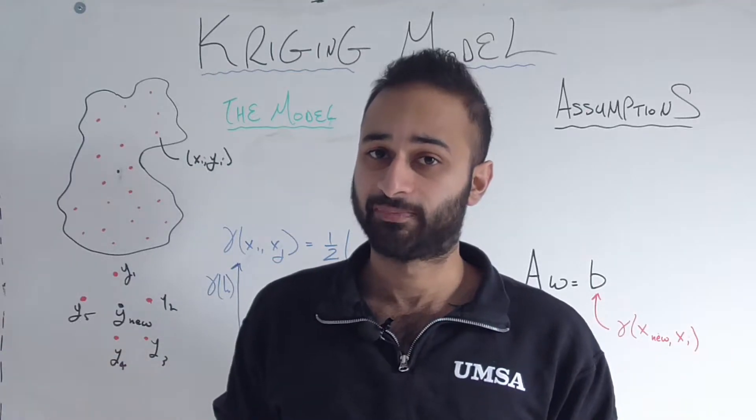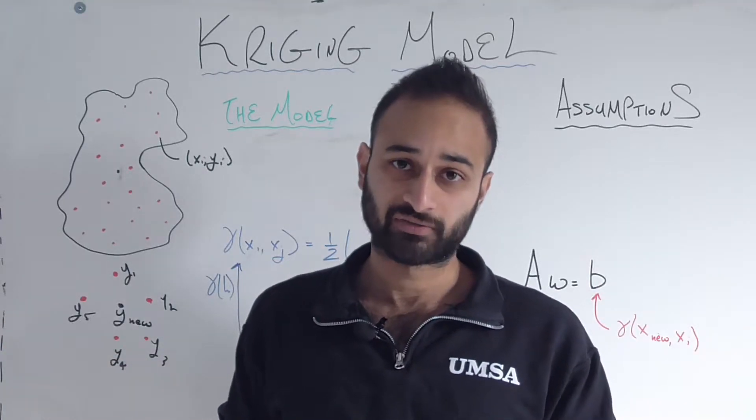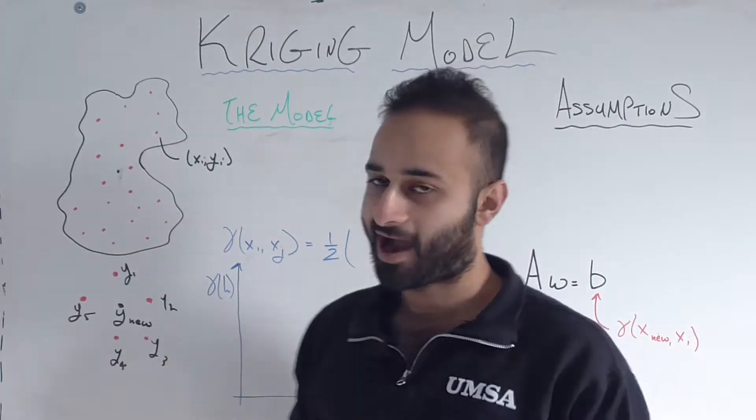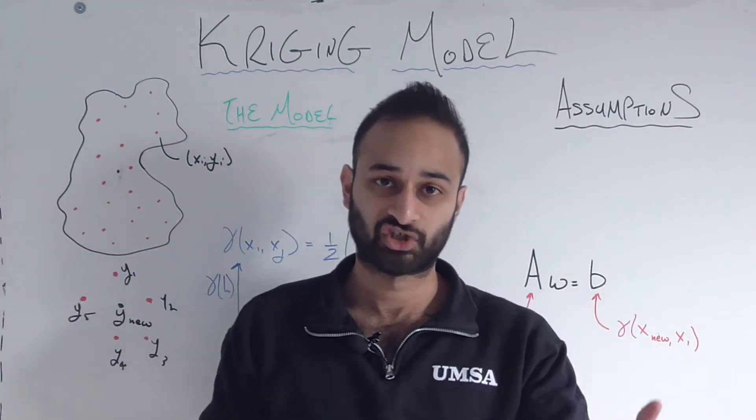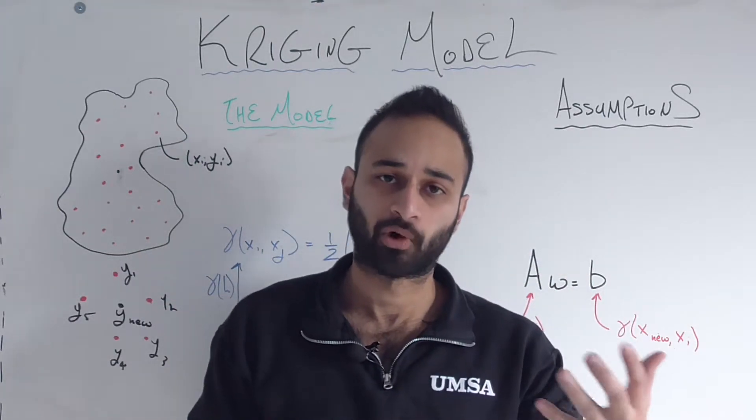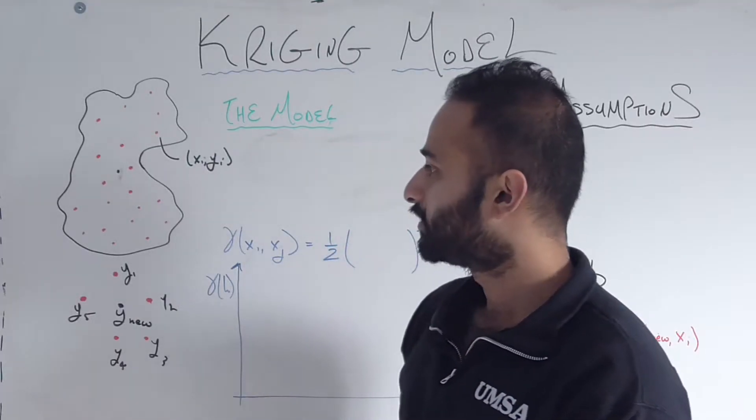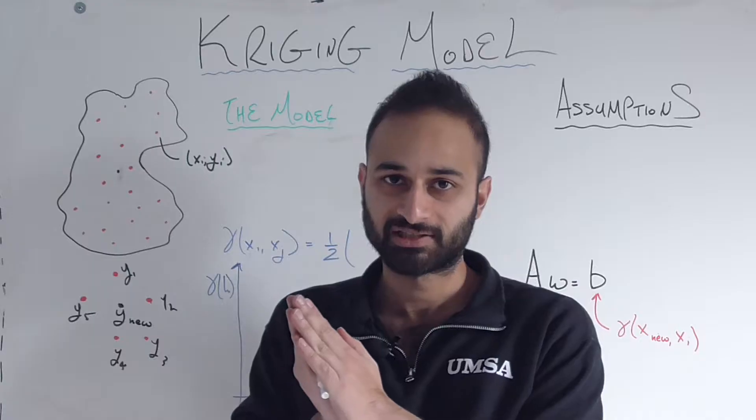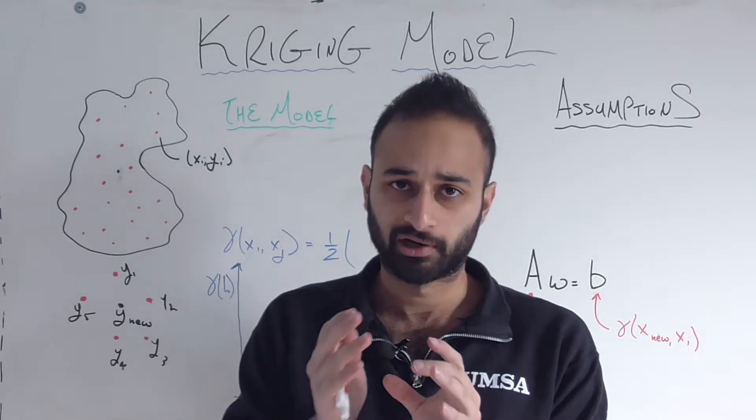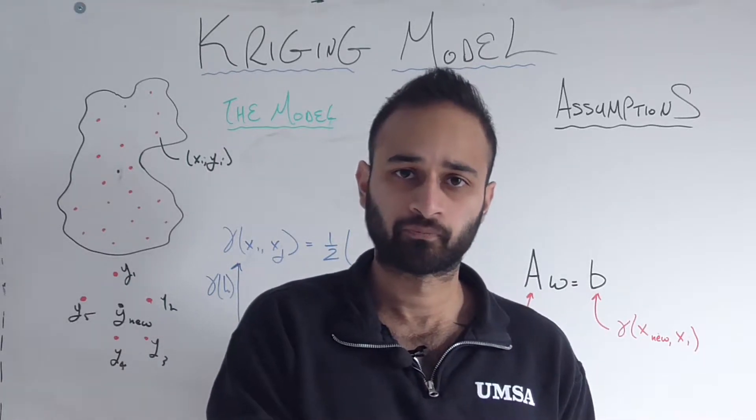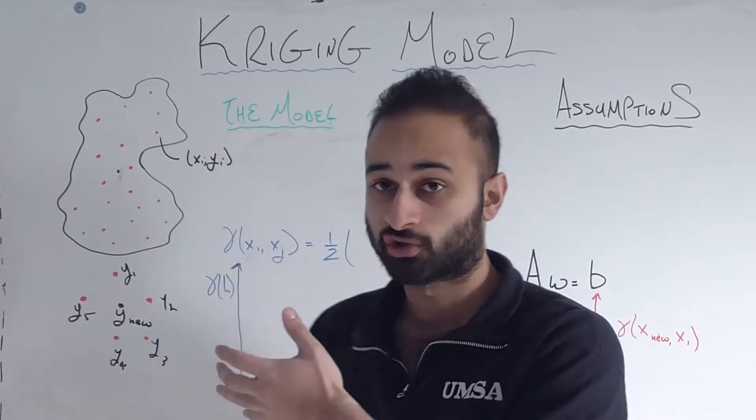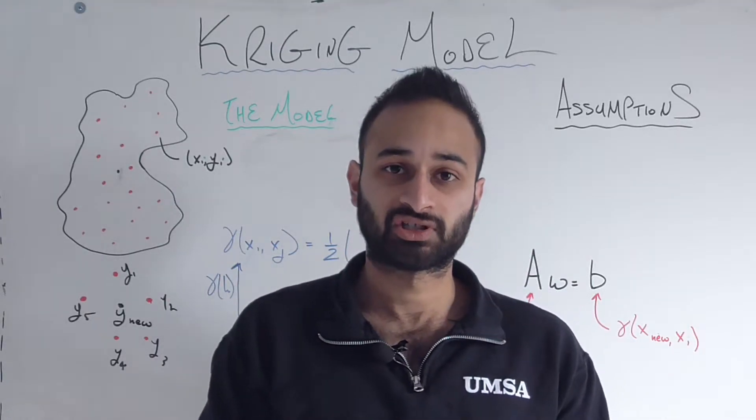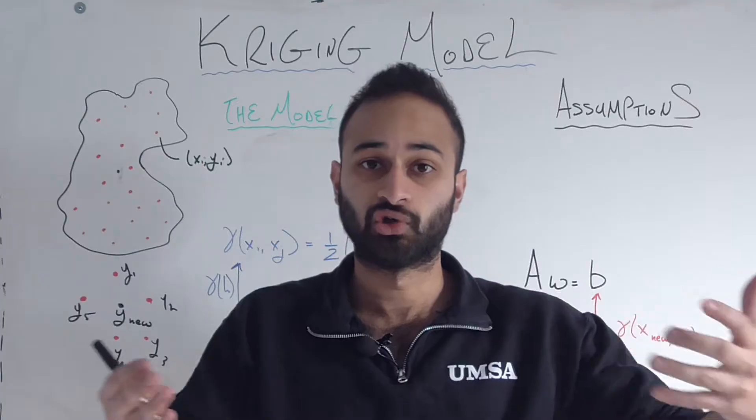So you're going to have to do the next best thing. The next best thing is of course use the existing data that you have in order to make a good prediction about what's the elevation at that point. Now as with many things in stats, we make predictions about unknown quantities based on things that are similar to this unknown quantity. We're going to do the same thing in this spatial statistical concept except here similarity will mean literal geographic similarity.